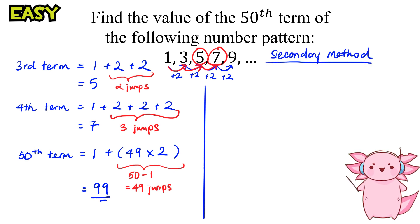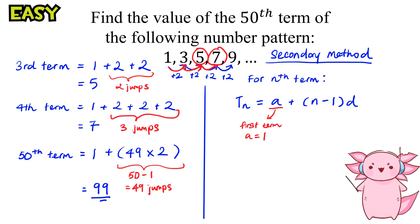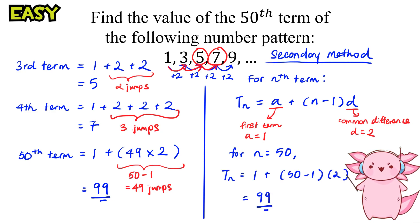This question can also be solved using the secondary school method where the nth term Tn equals a plus (n minus 1) times d. Since the first term a equals 1 and the common difference d equals 2, we sub in n equals 50 for the 50th term and we can also get 99.